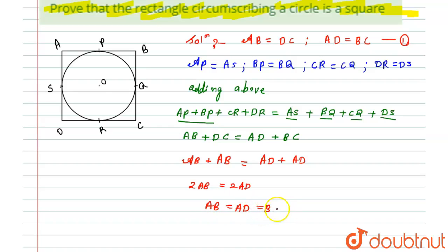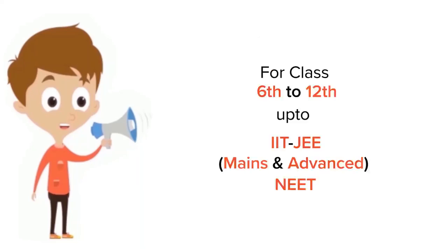Since all the sides of a square are equal, hence AB equals DC, this will also become equal to DC. As all the sides are equal, hence from here it is proved that the given rectangle which is circumscribing a circle is nothing but a square. Hence proved. I hope you like the solution. Thank you.